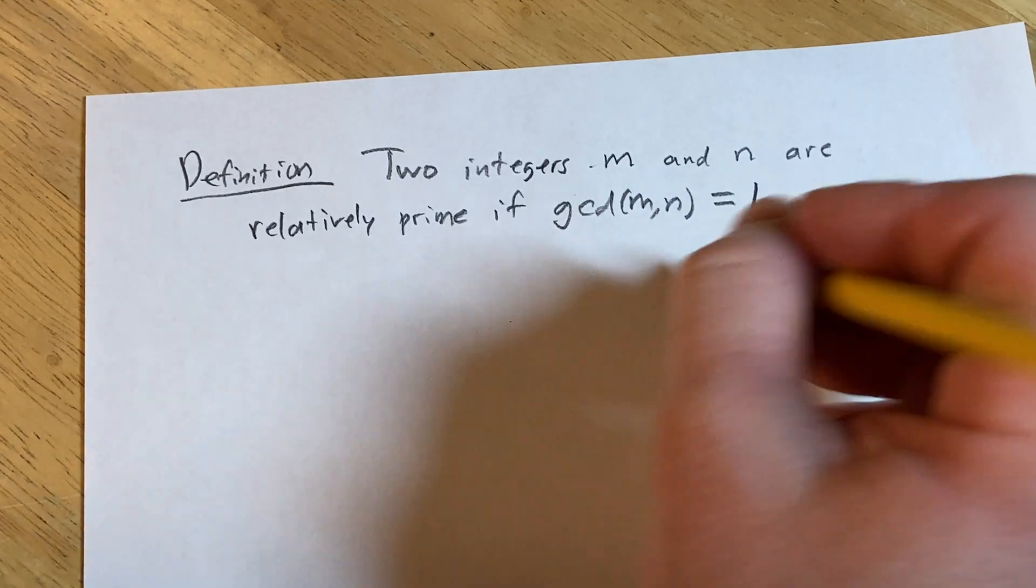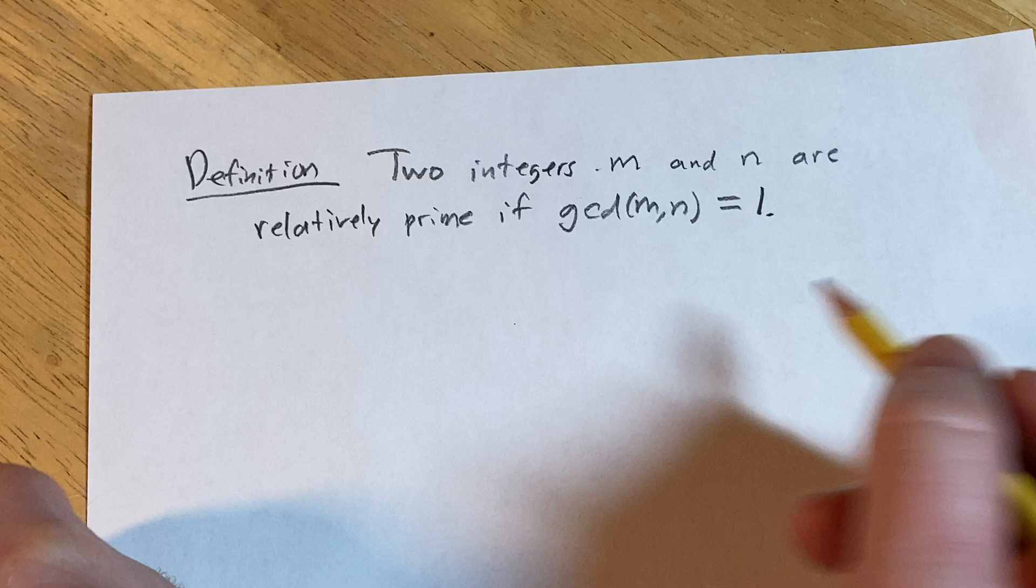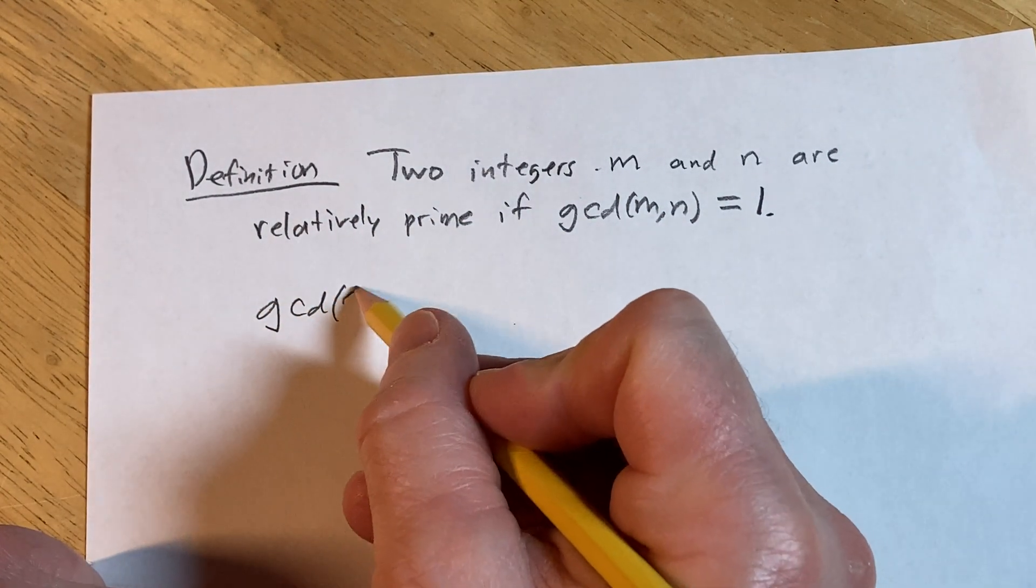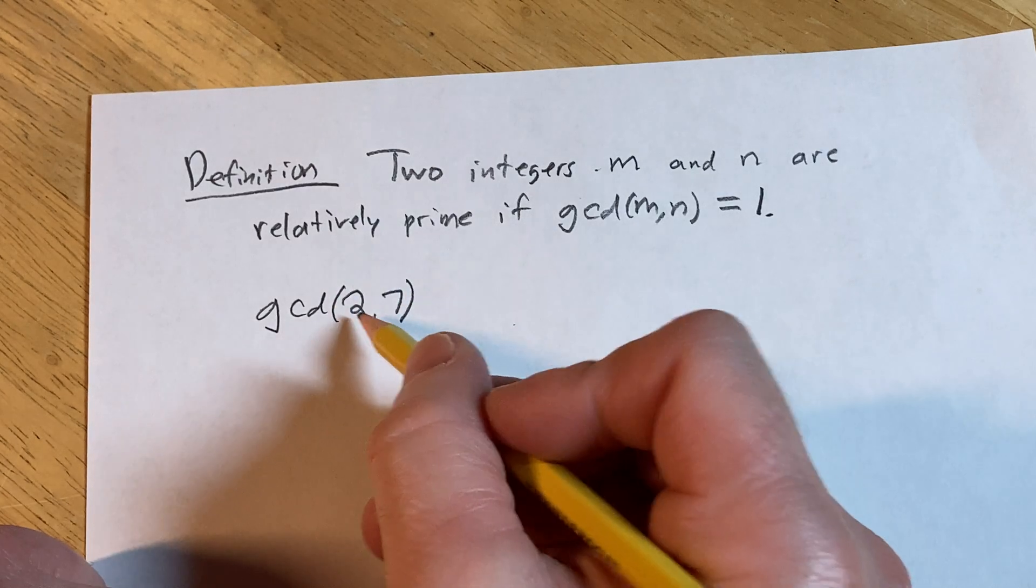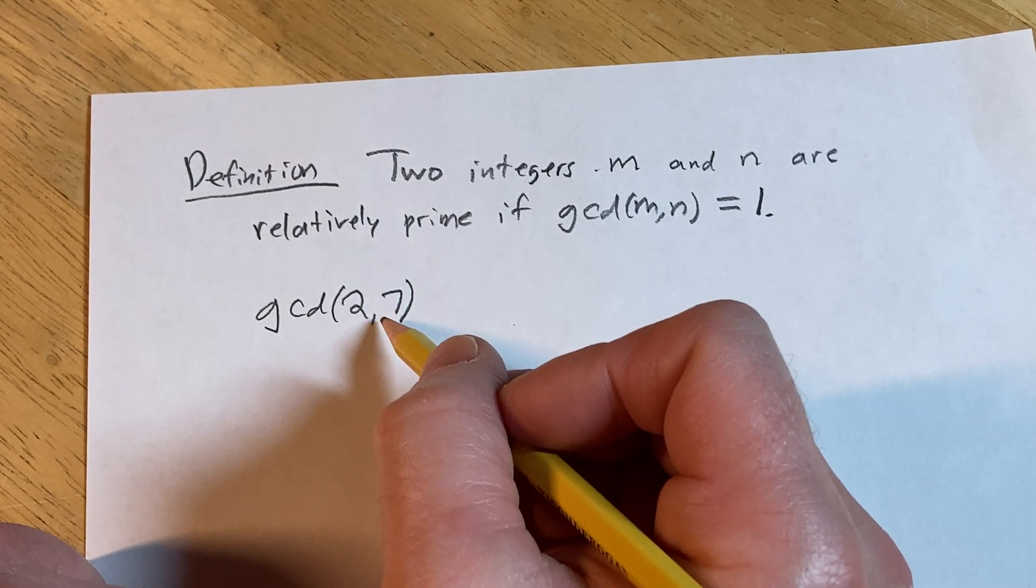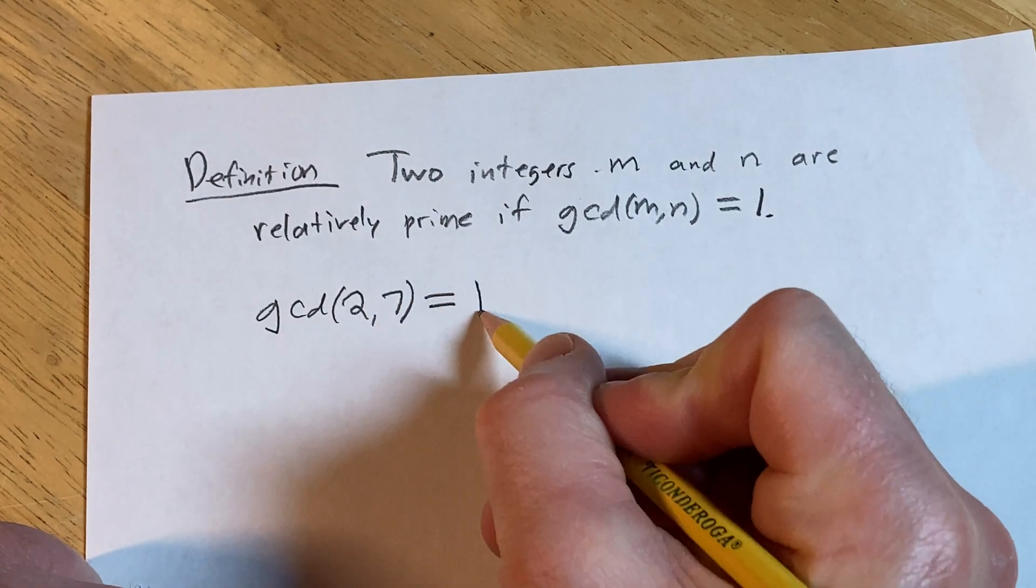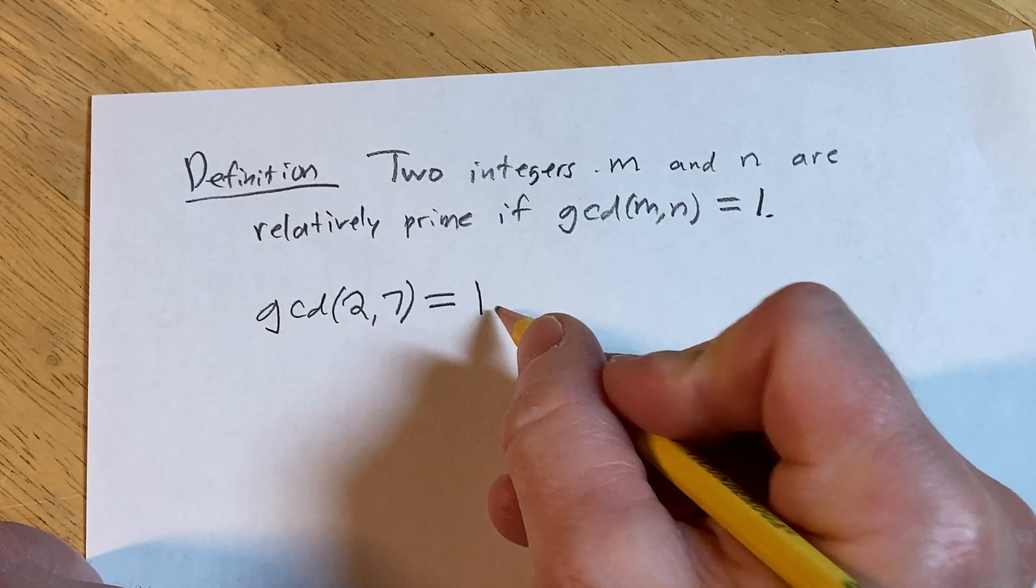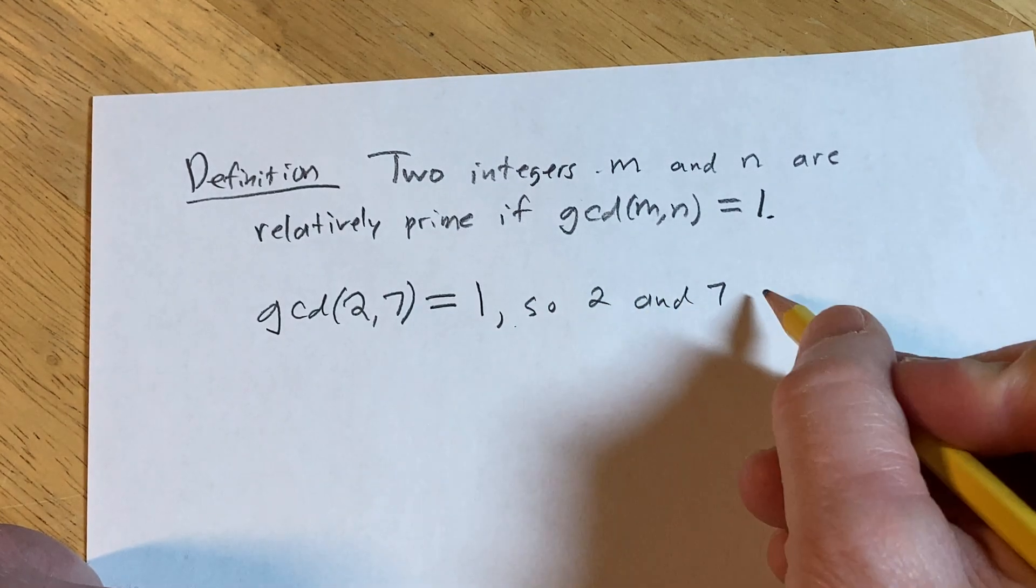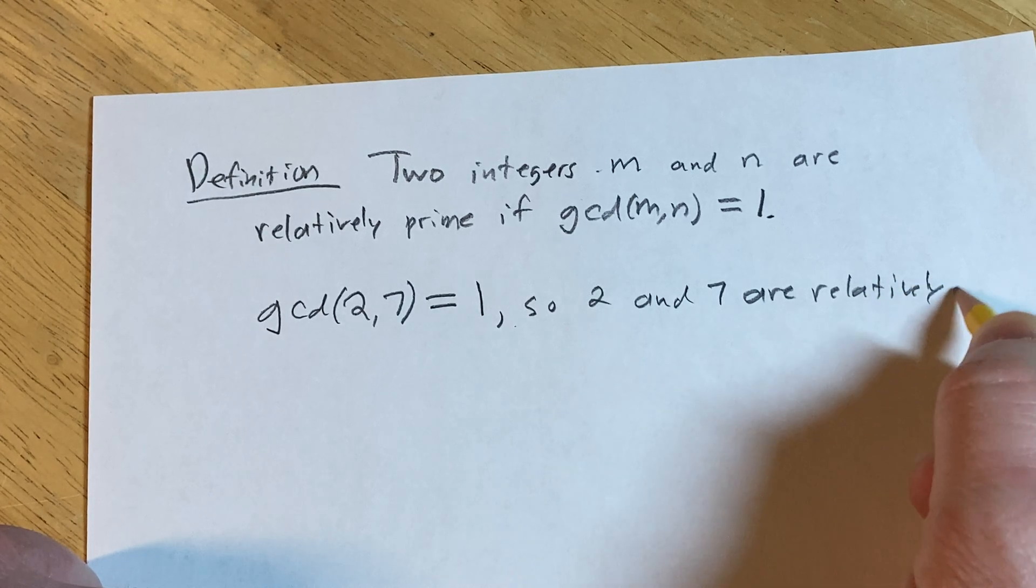They would be relatively prime if their greatest common divisor is 1. For example, if we look at the GCD of 2 and 7, the greatest common divisor of 2 and 7 is 1. In fact, the only common divisor of 2 and 7 is 1, and therefore it is the greatest one. In this case, 2 and 7 are relatively prime.